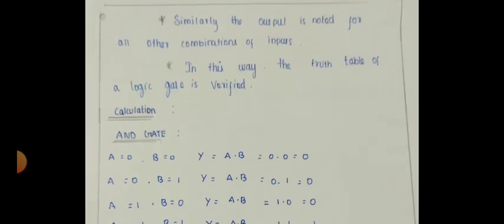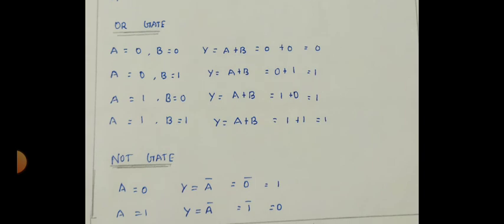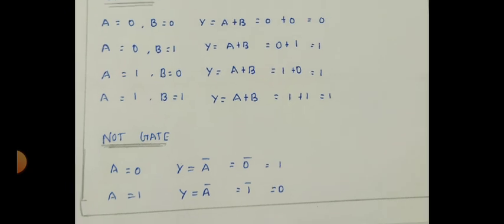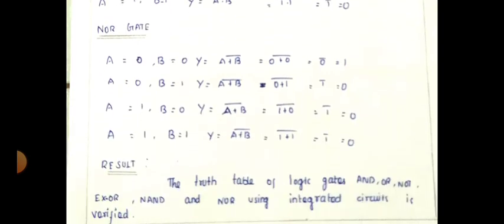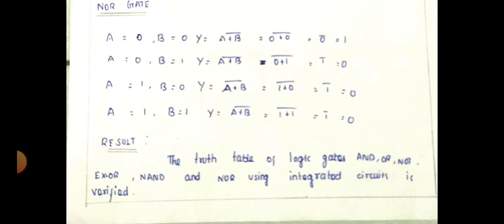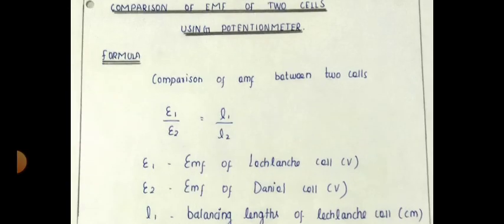Now the second part of the procedure: calculation for the AND gate, calculation for the OR gate, calculation for the NOT gate, calculation for the exclusive OR gate, calculation for the NAND gate, and the NOR gate calculation. In the result, the truth tables of AND, OR, NOT, exclusive OR, NAND, and NOR are written. From an examination point of view, if they give only three gates — for example AND, OR, NOT — then write those three alone.